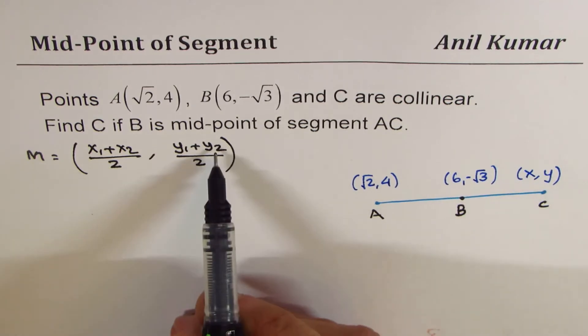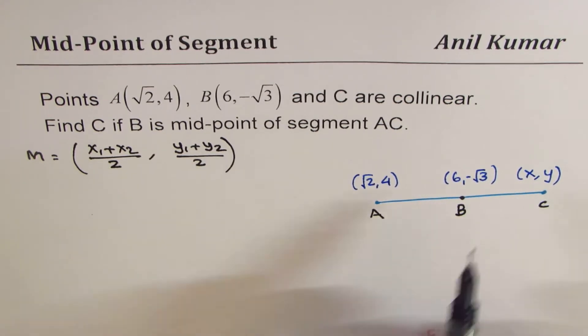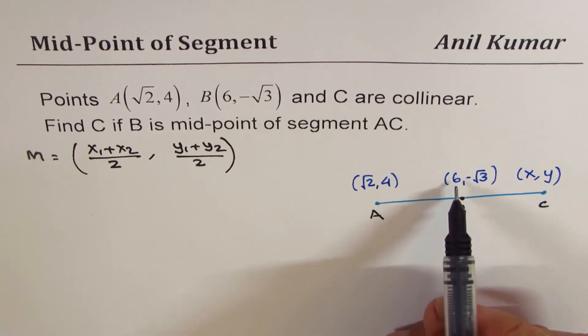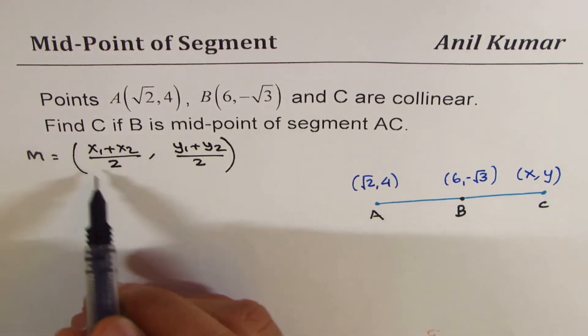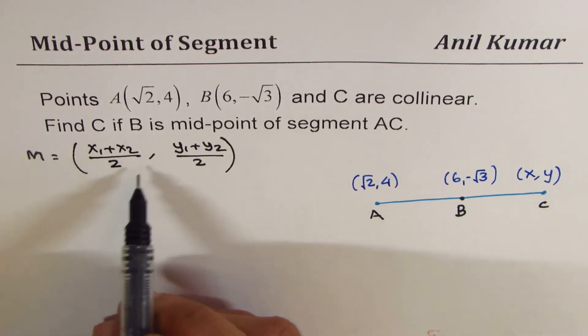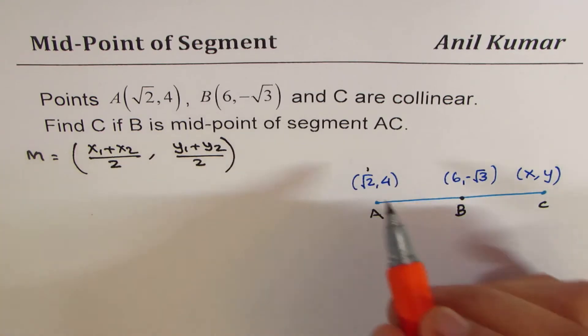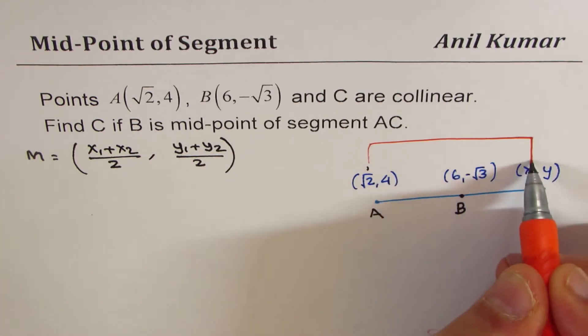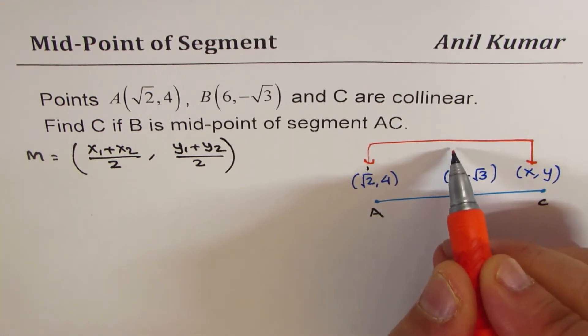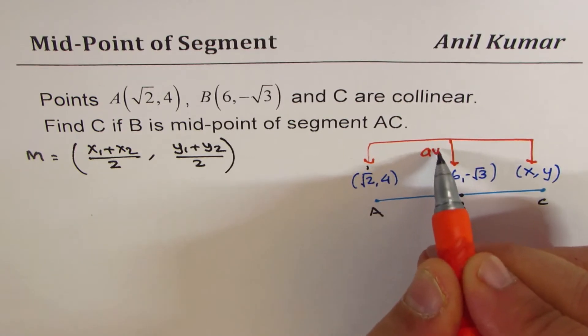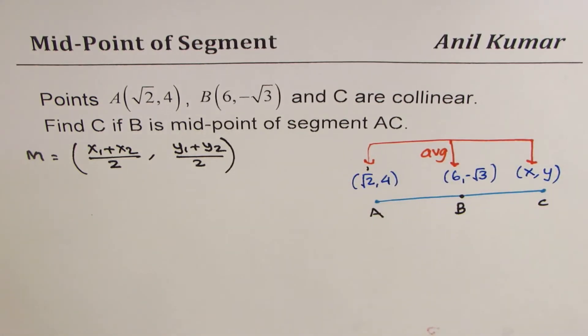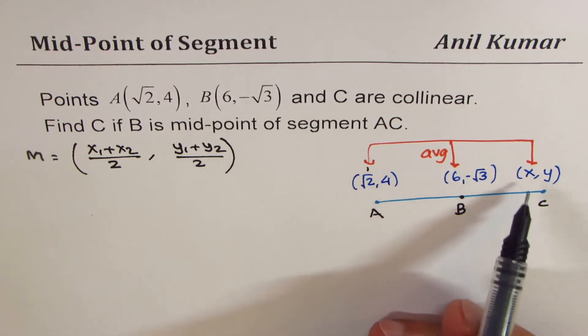Let's look into the x part. We can see that the average of these two—think like this: (x₁ + x₂)/2 is the average, right? So the average of these two is this. That is an easy way to understand the formula and apply it.